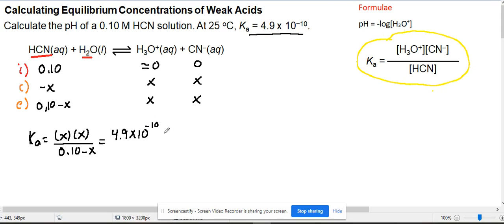Since that constant is so small, we can say X is so small that 0.1 minus X is approximately 0.1. So we can approximate this as X squared over 0.1. Again, we're saying 0.1 minus X is almost 0.1.